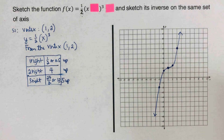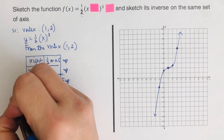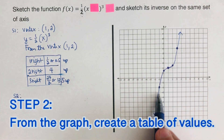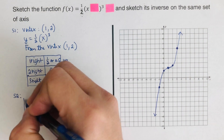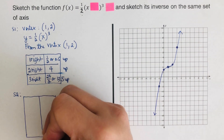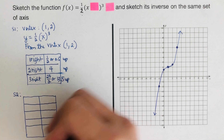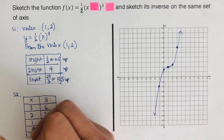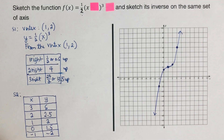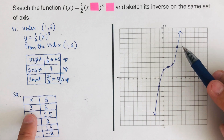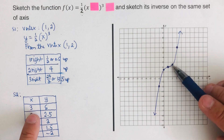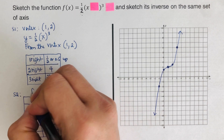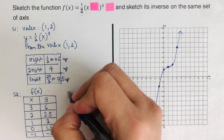Now we move to Step 2: from the graph, create a table of values. Looking at the dots, we determine the x and y coordinates. This table of values is for f(x).